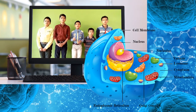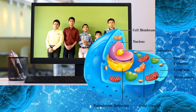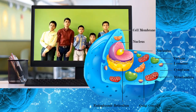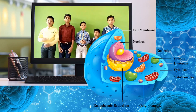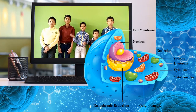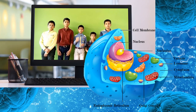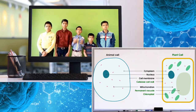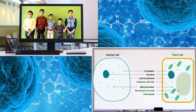Lysosomes contain digestive enzymes. The Golgi complex processes, packages, and secretes proteins. The endoplasmic reticulum transports proteins made by ribosomes around the cell. Mitochondria are the powerhouse of the cell, converting food into energy. The cell membrane is the outer boundary of the cell. Chloroplasts make food in plant cells. The cell wall provides structural support in plant cells.